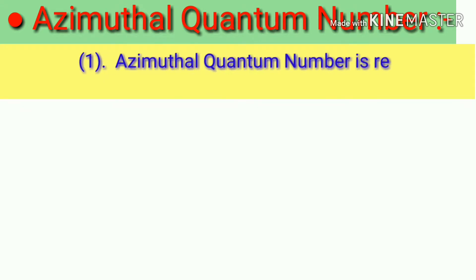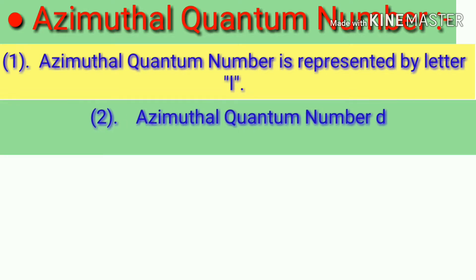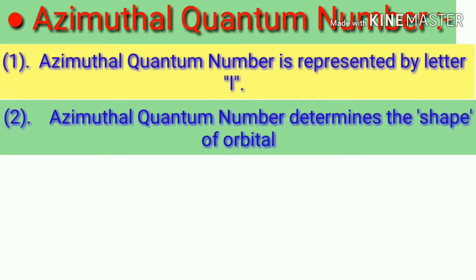Now we will see azimuthal quantum number. Azimuthal quantum number is represented by letter L. Azimuthal quantum number determines the shape of orbital.